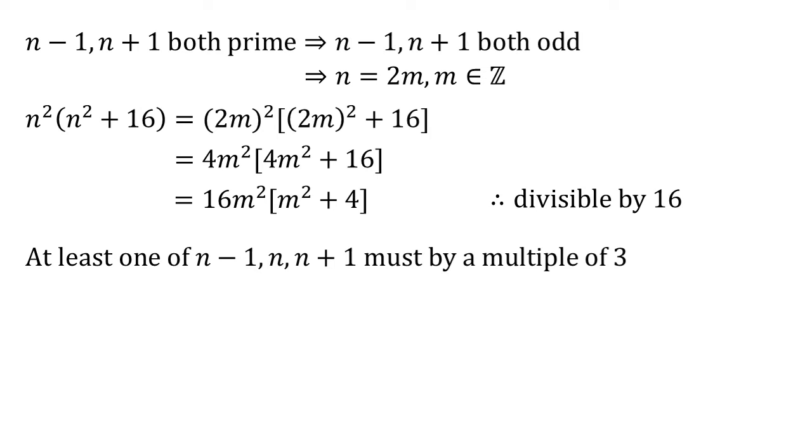We also know that if we've got three numbers in succession, n minus 1, n and n plus 1, at least one of them has to be a multiple of 3. Well n minus 1 and n plus 1 are prime and larger than 3, so therefore it must be n that is a multiple of 3.